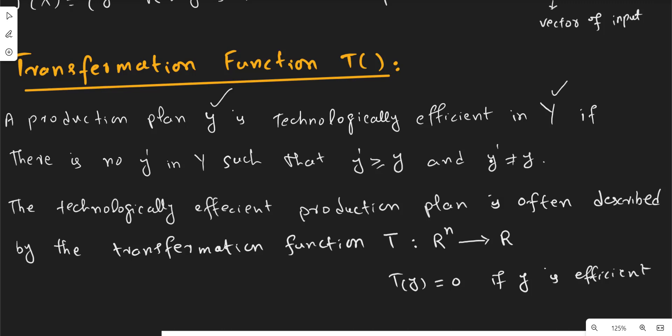And also y prime is not equal to y. This means there is no y prime which can give you more output than y. If this possibility exists then y prime will be the best one, but this is not the case because it is technologically efficient and there is no such y prime.